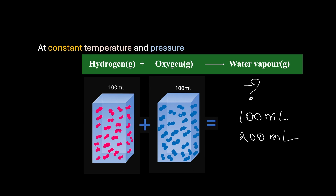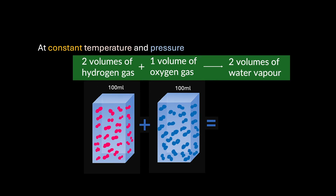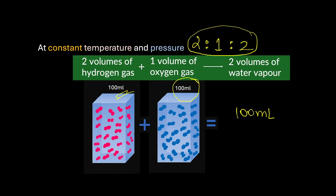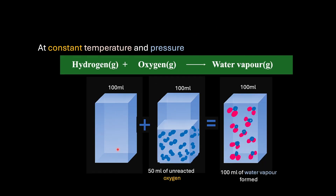Let's again see the experimental observation as per Gay-Lussac's law, which talked about hydrogen and oxygen combined to form water vapour in the ratio of 2:1:2. That means 100 ml of hydrogen would react with 50 ml of oxygen to form 100 ml of water vapour, maintaining our 2:1:2 ratio. That means the hydrogen container would be completely empty as 100 ml of gas is fully used up. But our oxygen container still has 50 ml of unreacted oxygen gas. We have 0 ml remaining in hydrogen, 50 ml of oxygen remaining, and 100 ml of water vapour being formed.